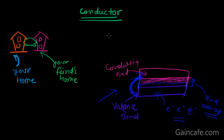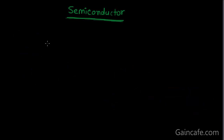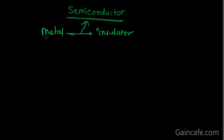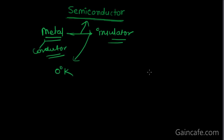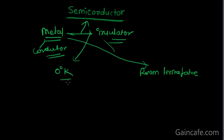Now the most important thing — we are going to learn about the semiconductor. Semiconductor is the middle ground between the conductor and the insulator. A semiconductor is a type of material whose conductivity lies between that of a metal and an insulator — it is half conductor and half insulator. There are two conditions: one at zero degrees temperature and one at room temperature. At zero degrees temperature, the semiconductor behaves like an insulator.